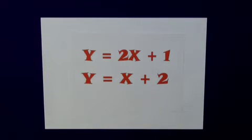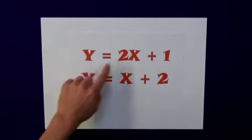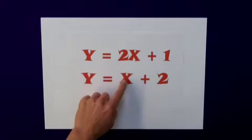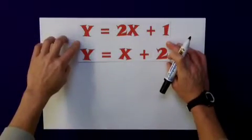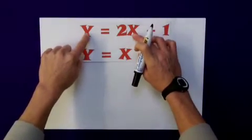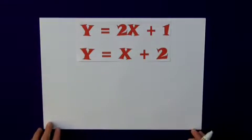Here we have our two simultaneous equations, remembering that the y value here is the same here, the x value here is the same here. The problem that we have is that in each equation we have two unknown values, a y and an x, a y and an x. And we need to try and eliminate one of them by some means.